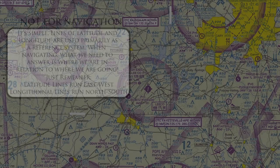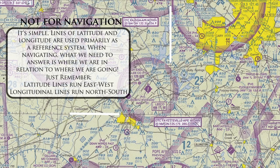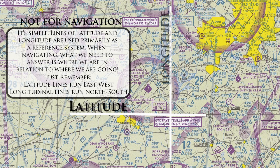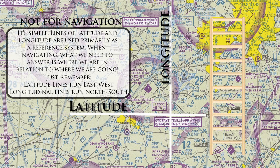These white lines you see represent lines of latitude and longitude. On the sectional they appear as black lines with tick marks. If you're having trouble differentiating the lines, think of it this way: a ladder may be the best example. The rungs of the ladder — the horizontal lines — represent latitude, and the vertical portion represents longitude.